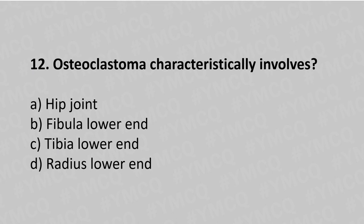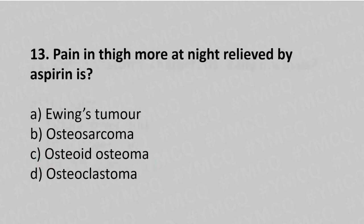Question number twelve: osteoclastoma classically involves option A hip joint, option B fibula lower end, option C tibia lower end, option D radius lower end. The answer is option D, radius lower end.